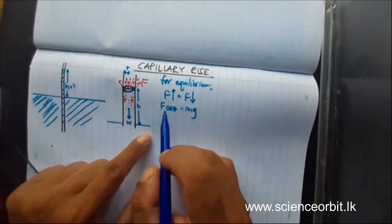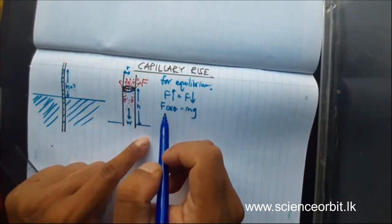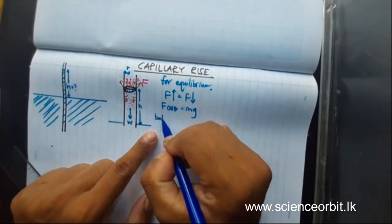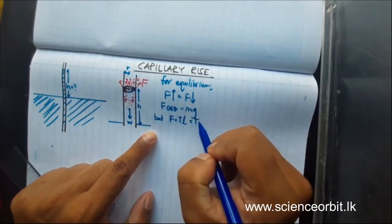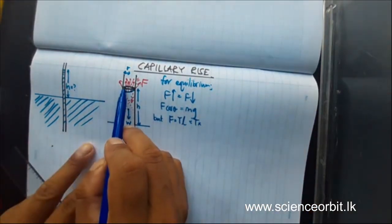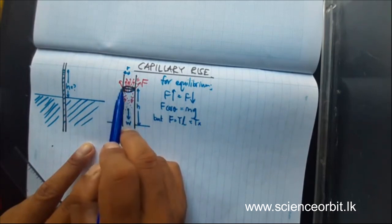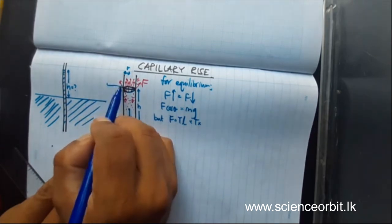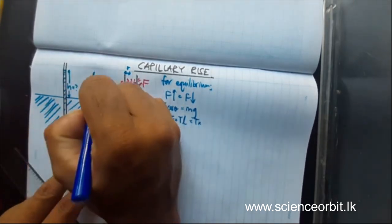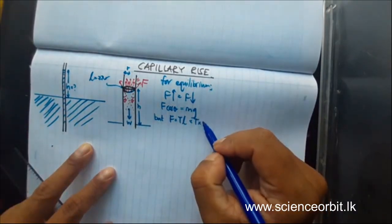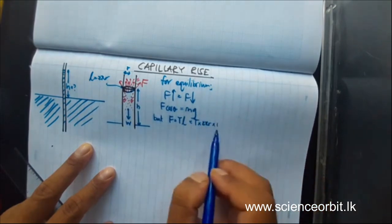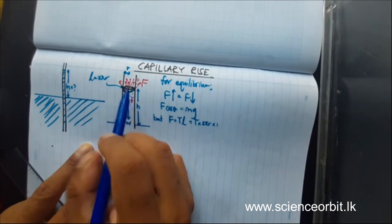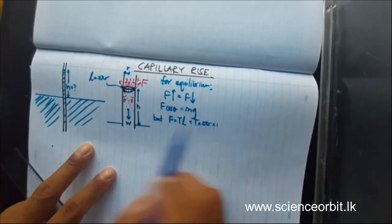F is the force created due to surface tension, and we have learned that F equals surface tension multiplied by length. So F equals surface tension T into 2πR — the length is the circumference of the circle where the liquid surface interacts with the solid surface. We multiply by 1, not 2, because there is only one free surface — the liquid meniscus has just one free surface.